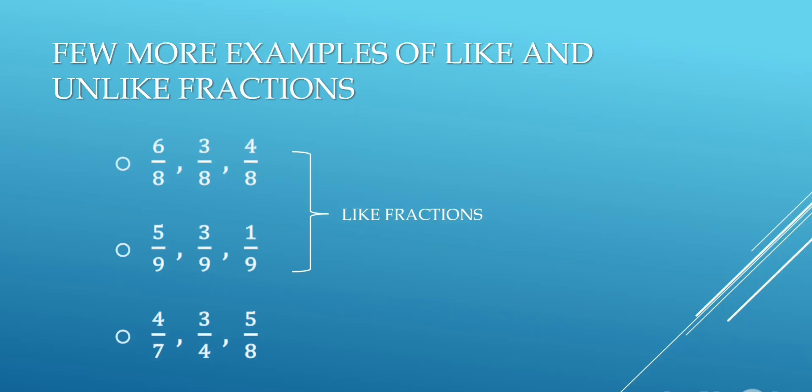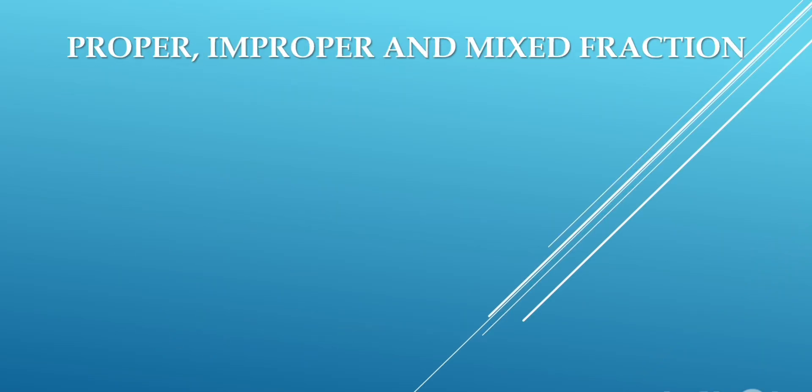4 upon 7, 3 upon 4, 5 upon 8 — in this example, denominators of all fractions are different, so these are unlike fractions. Next: proper, improper, and mixed fraction.